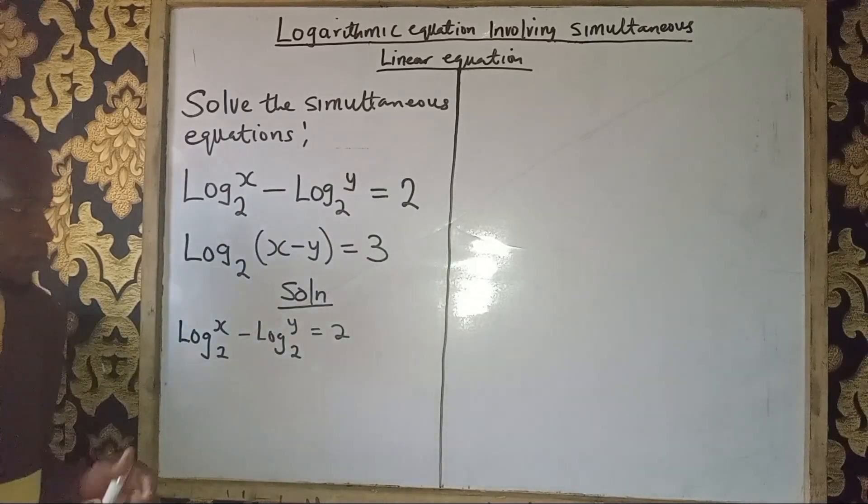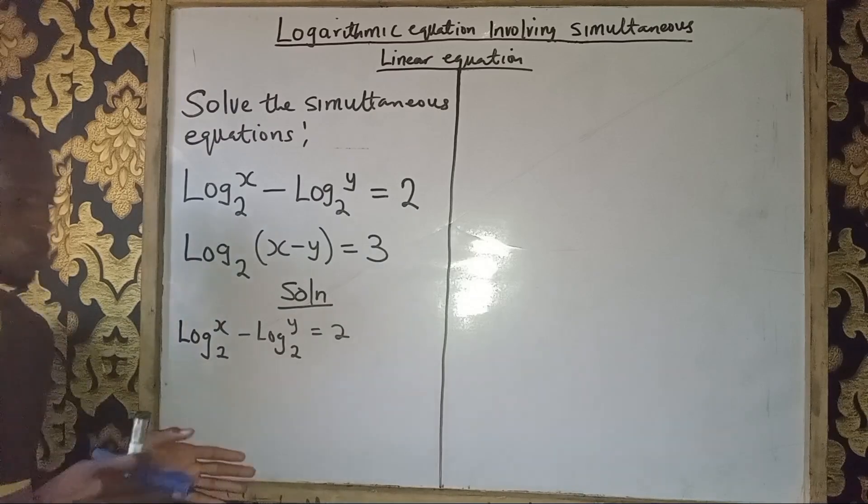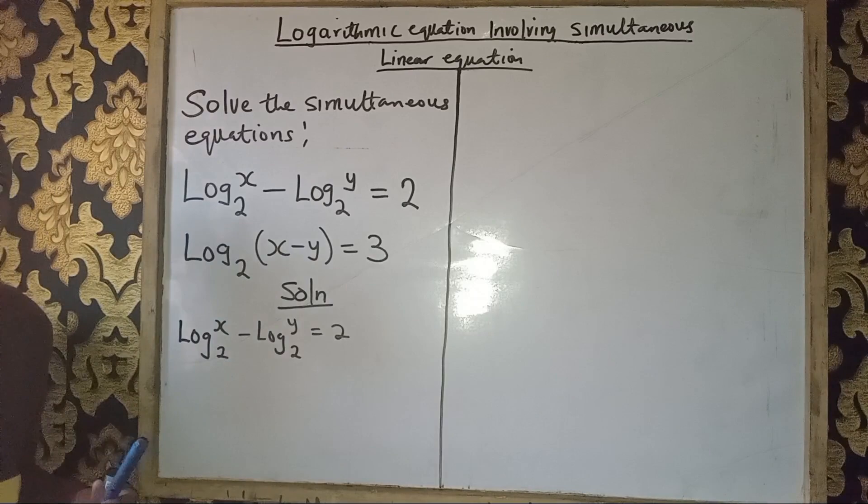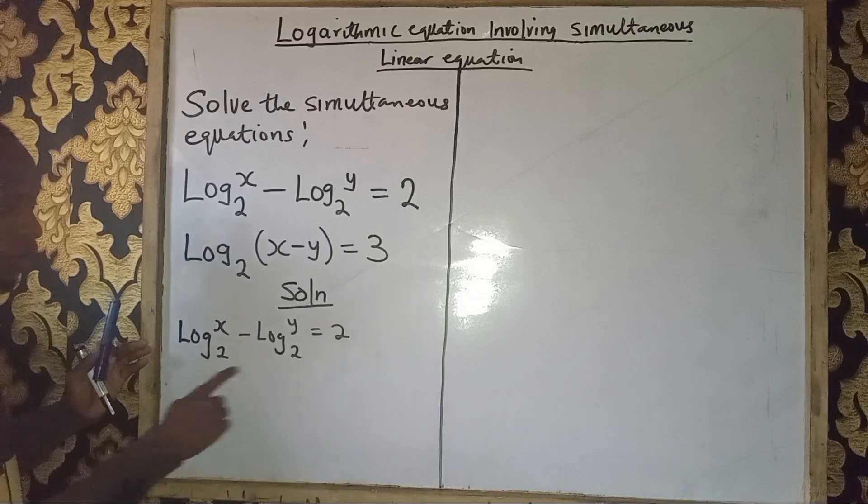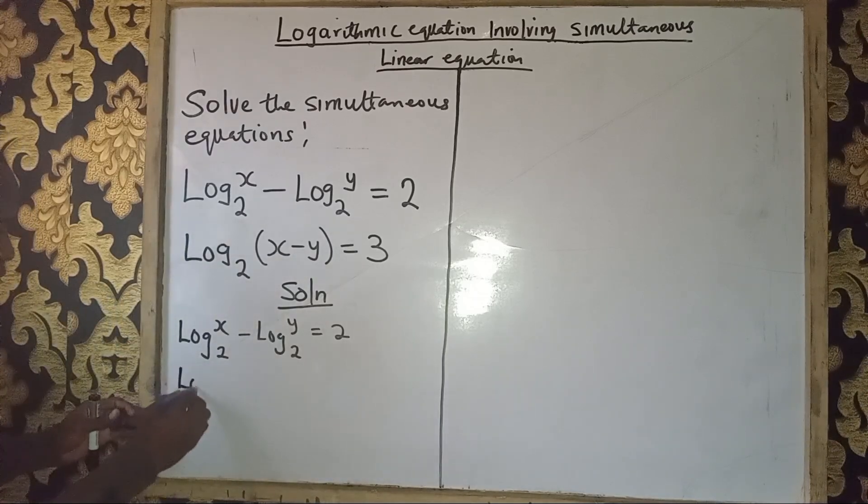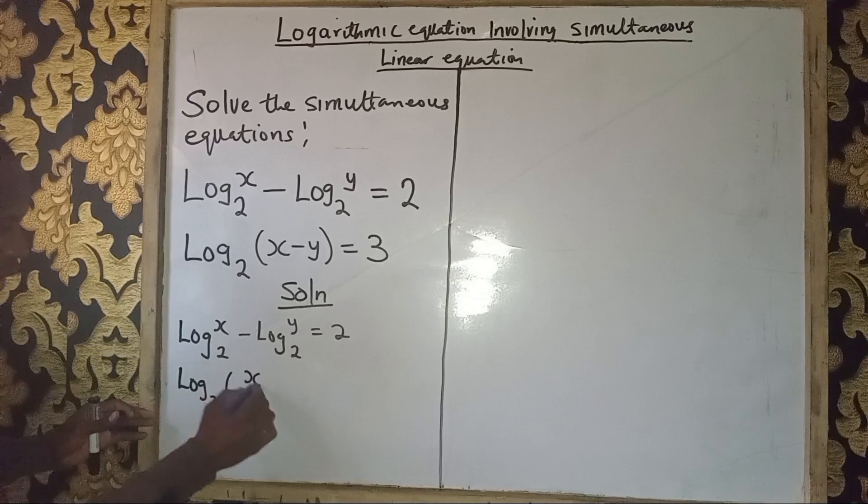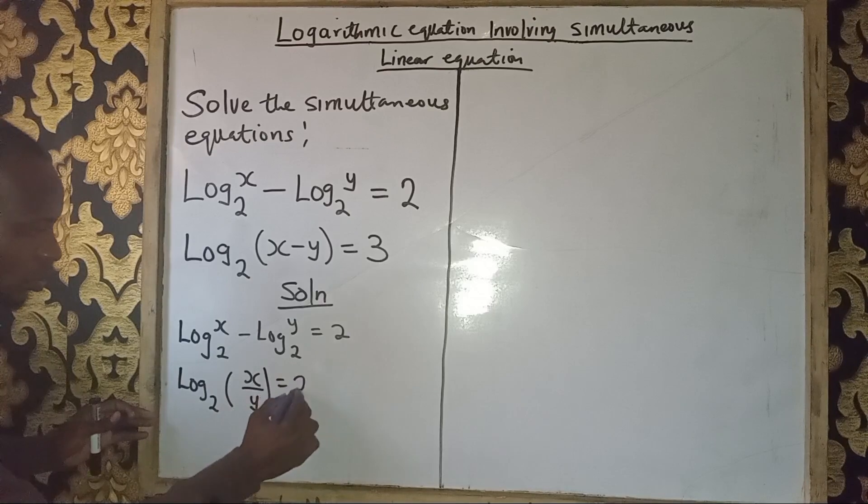Let's take this back from log to just a linear equation. How do we achieve that? I've explained these principles before. When you have the same base, you can bring out one base: log base 2 of (x/y). The minus changes to division, so x over y equals 2.